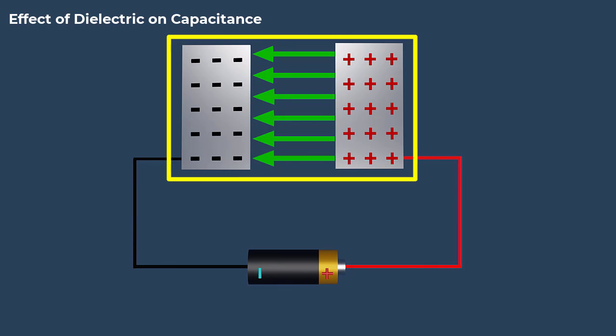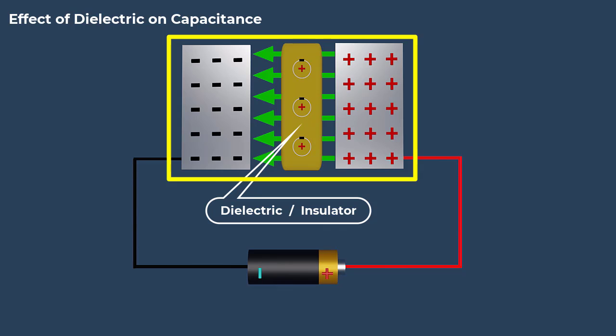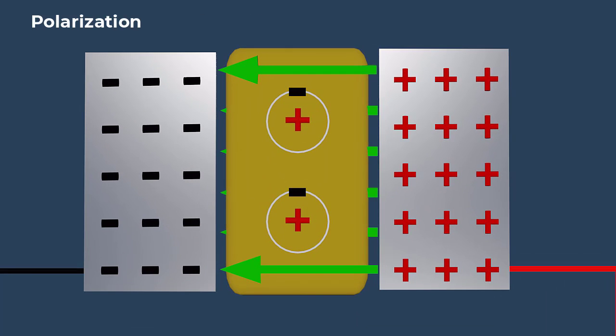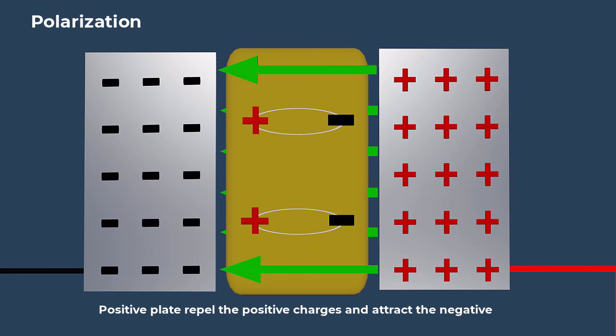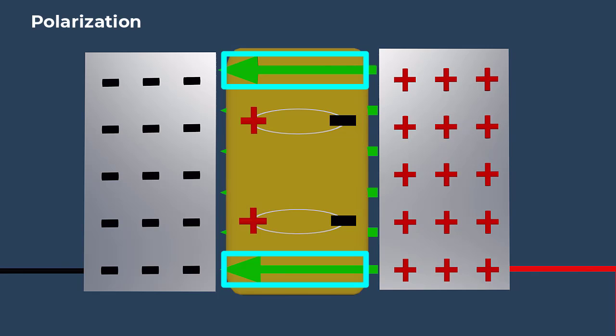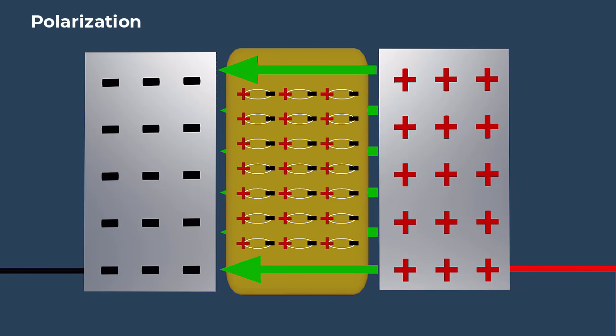To enhance the capacitance of a capacitor, without changing its physical dimensions, we place a dielectric material between the plates. Positive and negative charges within the atoms of the dielectric material separate, due to the influence of the external electric field between the plates. This separation of charges is called polarization.